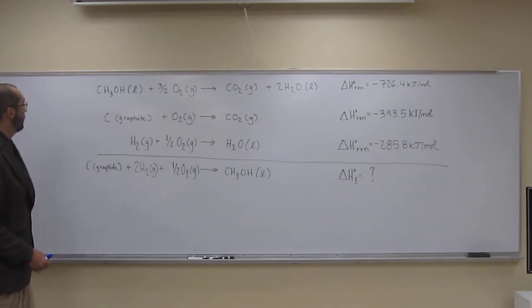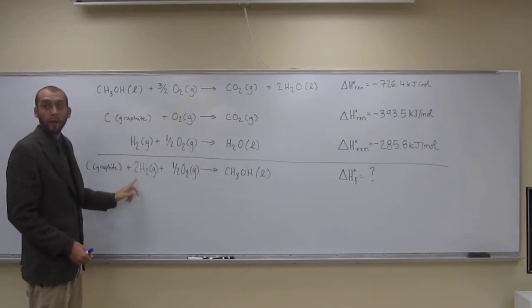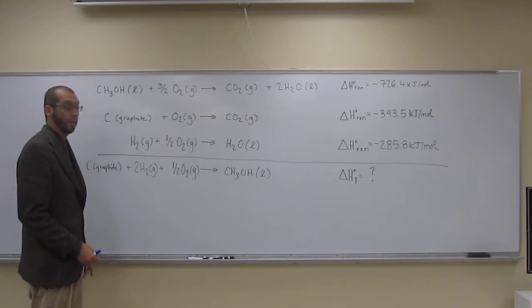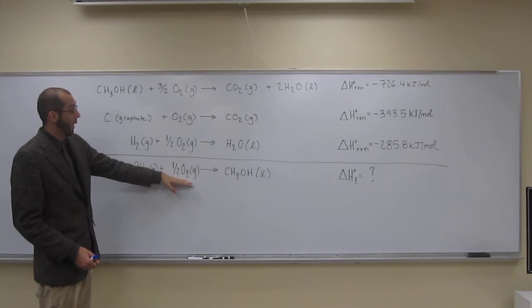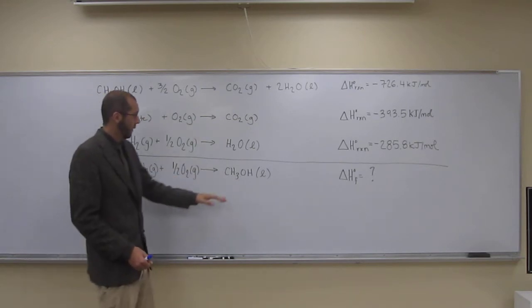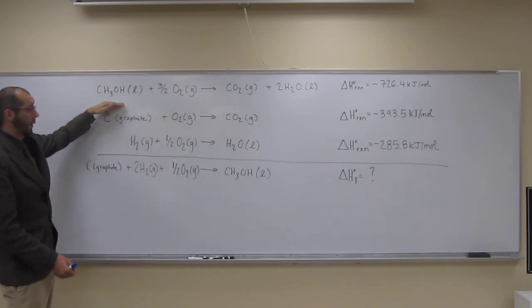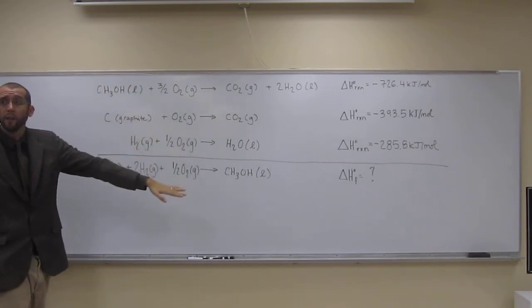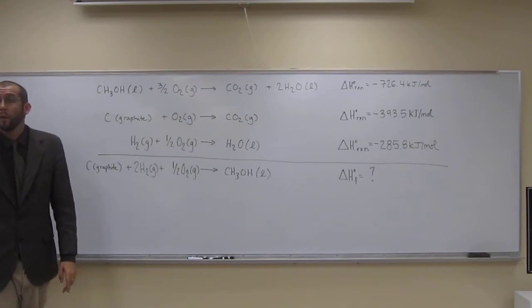Hopefully you can see something like C graphite is there, right? H2 is there, albeit not in the right coefficient quantities. And O2 is there as well. But if we look over here, methanol CH3OH is on the reactant side, and in our final reaction it's on the product side. So that gives us a clue as to what we want to do.